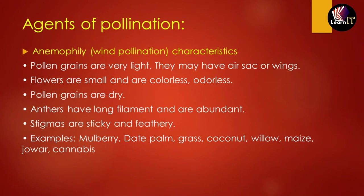Now let us talk about the agents of pollination. The first is anemophily, which means wind pollination. The characteristics are: pollen grains are very light and may have air sacs or wings. The flowers are small, colorless, and odorless. Pollen grains are dry with long filaments and are abundant. The stigma is sticky and feathery. Examples include mulberry, date palm, grass, coconut, maize, jowar, and cannabis.